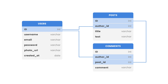Users and posts are connected together by ID — the author ID in the post model is the ID of the user table. Also, the user ID of the comment model is the ID of the user table, and the post ID of the comment model is the ID from the post table. This is how they're connected, which means developers can easily retrieve user data for a post without duplicating it or saving it in the post table.